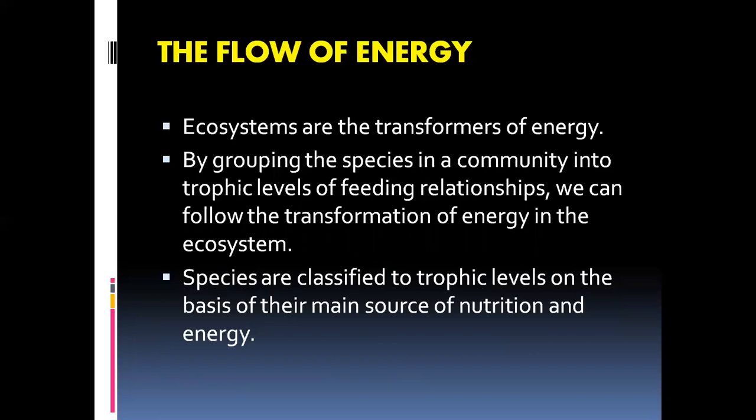First, you should know two terminologies. A species is defined as a group of living organisms of the same type which can interbreed among themselves to produce offspring of their own type, living at the same place at the same time. A community is a larger group — when many species are living at the same time at the same place, sharing a common place of living and common resources in that area.